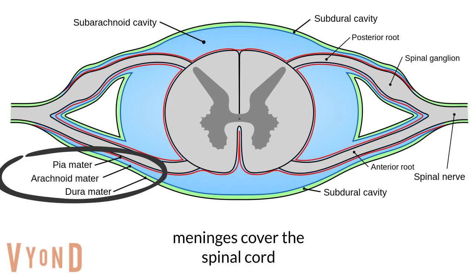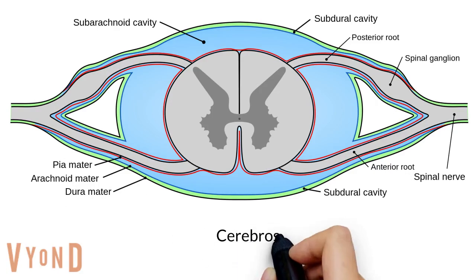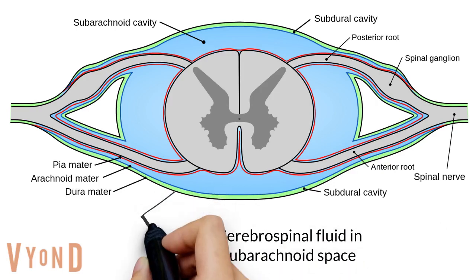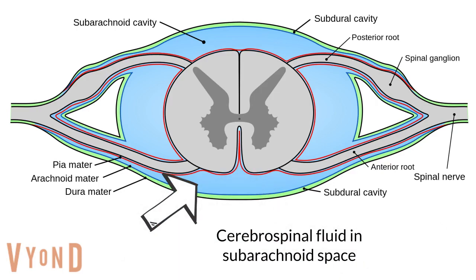Inside of the dura mater is the arachnoid mater. The pia mater contacts the surface of the spinal cord. There is a space between the arachnoid and pia mater called the subarachnoid space, which is filled with cerebrospinal fluid.